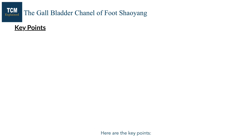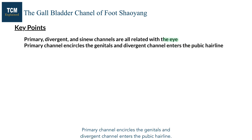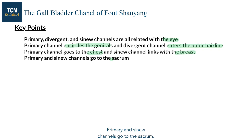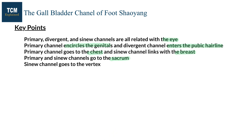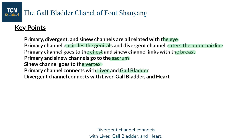Here are the key points. The primary, divergent, and sinew channels are all related with the eye. The primary channel encircles the genitals and the divergent channel enters the pubic hairline. The primary channel goes to the chest and the sinew channel links with the breast. The primary and sinew channels go to the sacrum. The sinew channel goes to the vertex. The primary channel connects with the liver and gallbladder, while the divergent channel connects with the liver, gallbladder, and heart.